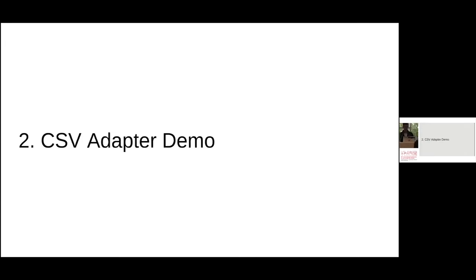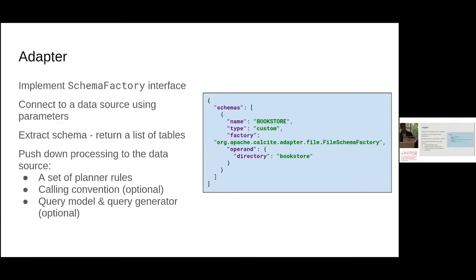I'll show you how Calcite can be used to query CSV data. Calcite provides the notion of an adapter, which is the underlying engine where the query is executed. For the CSV adapter, you implement a schema factory. To explain how to read tables, we use a file schema factory that reads the schema from the file system — it reads the directory. As you can see, the operand is a directory called 'bookstore', so Calcite scans that directory and each file there corresponds to a table. The first line denotes the schema, so without anything more, you're ready to execute SQL queries over CSV files.